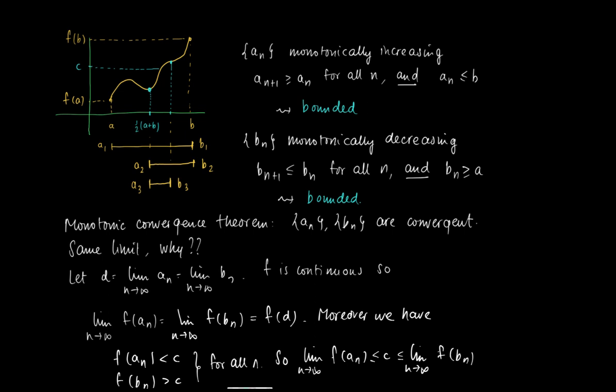But now use that on the left-hand side of this inequality, we see f(d). And on the right-hand side we see f(d). So, since c is in between f(d) and f(d), we must have that f(d) equals c. So actually we found an x, namely x equals d, such that f(x) equals c, which is what we needed to prove.